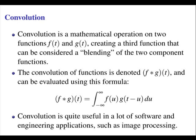In this MathsCast presentation, we're going to look at convolution. Convolution is a mathematical operation on two functions, f of t and g of t, creating a third function that can be considered a blending of the two component functions. The convolution of functions is denoted f asterisk g and can be evaluated using the following integral formula.